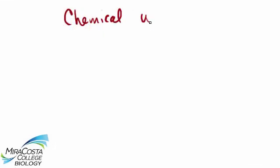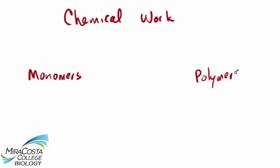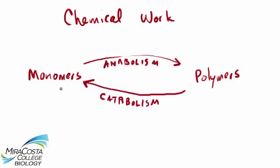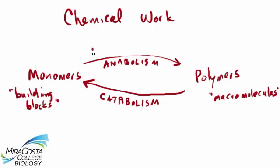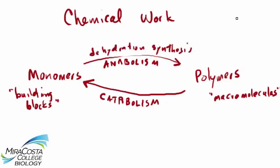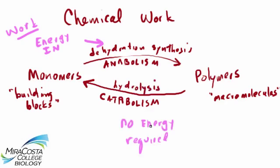Yet another kind of cellular work that is very important is chemical work. Earlier we addressed this when we talked about the anabolism of polymers from monomers. Macromolecules are often constructed out of organic building blocks, and the process of dehydration synthesis was said to require the input of energy—this would be an example of chemical work. The opposite reaction—the catabolic breakdown of polymers into monomers via hydrolysis—is not energy requiring and would not be an example of chemical work. This is more like the example of a car rolling down the hill with no exertion of force.